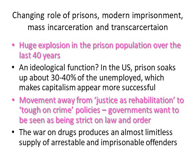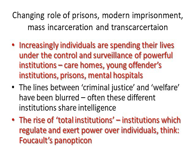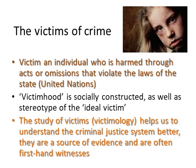Increasingly, individuals are spending their lives under the control and surveillance of powerful institutions — this is known as transcarceration, where people move between care homes, young offenders institutions, prisons, mental hospitals, and so on. As a result, the lines between the criminal justice system and the welfare system have been blurred, and these total institutions share intelligence, information, and databases. People can find themselves stuck in or moving between them for many years, and these institutions regulate and exercise huge power over individuals — another example perhaps of Foucault's panopticon.